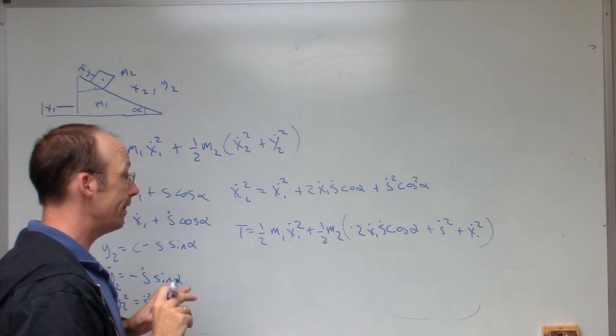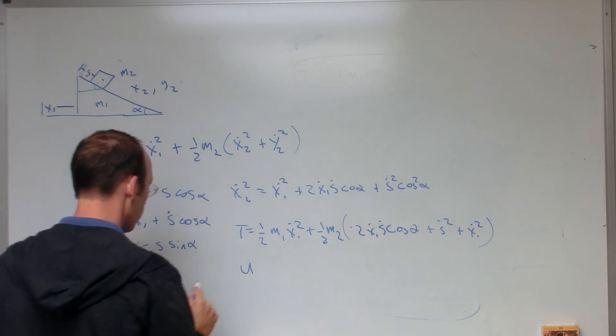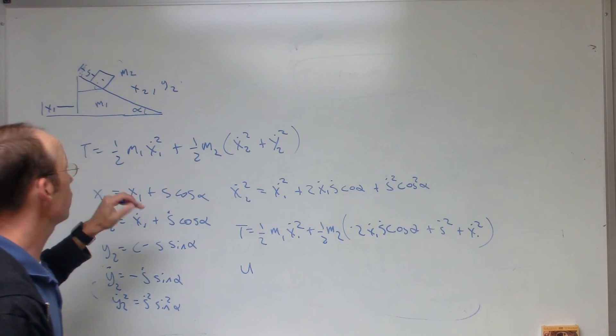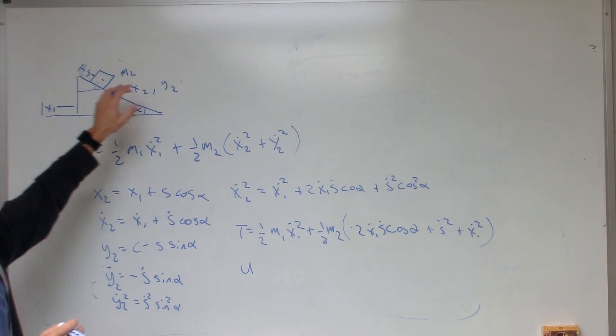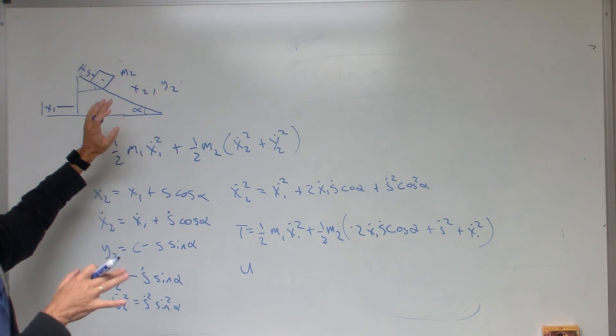Now, we need the potential energy. There's only the gravitational potential. Block one only moves this way. So, we could say it has zero potential energy. It doesn't change. You could say it's a constant,